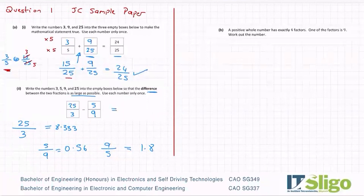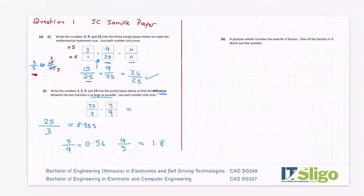And that's how I think you would get the difference being as large as possible. Nothing wrong with playing around with the four numbers on your calculator and seeing if that pops out. Part B then, a positive whole number has exactly four factors. One of the factors is nine. Work out the number.